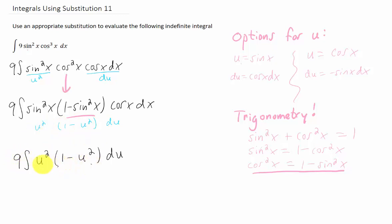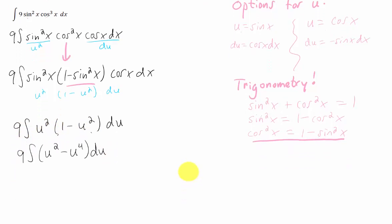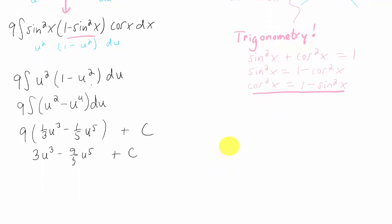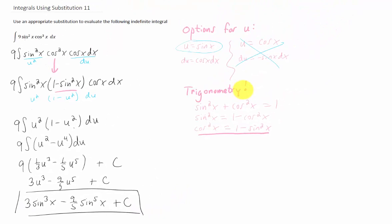This integral here can now be handled by distributing the u squared through the parentheses. And now we can just use the simple power rule, which gives us 1 third u cubed minus 1 fifth u to the fifth. This is an indefinite integral, so I'm going to put a plus c on the end of it. You can distribute the 9. And let's see, what did we actually end up using as our u? We said u was sine of x. We used this one here, and we didn't use that one. So we can substitute that back in, and we can box that answer up, and we can call this problem finished.